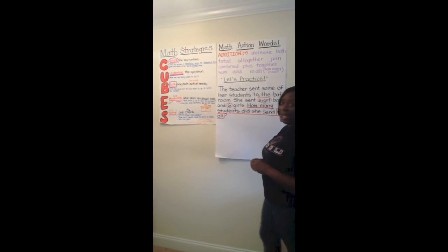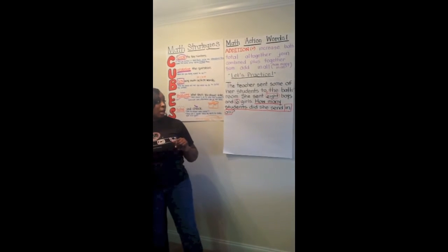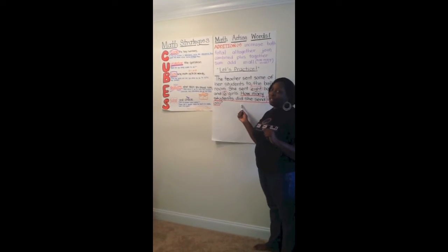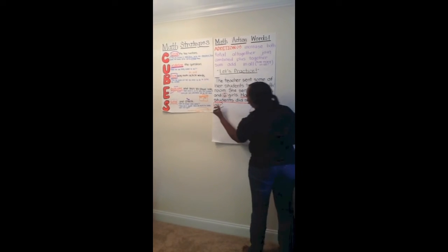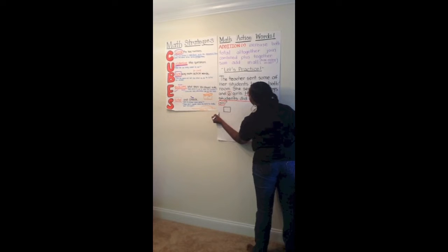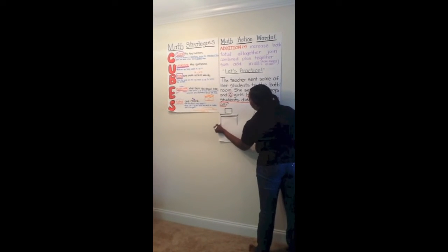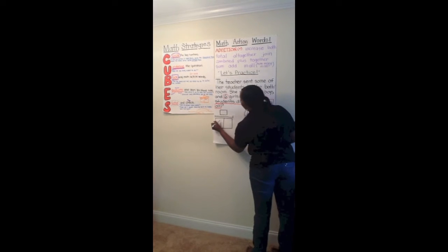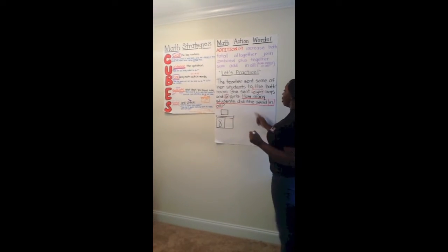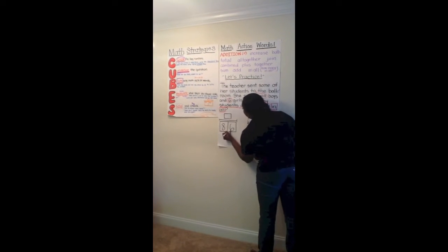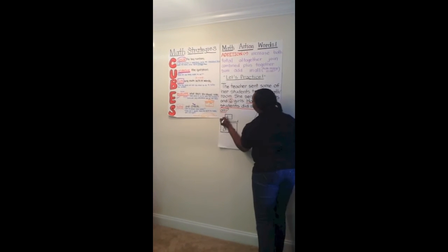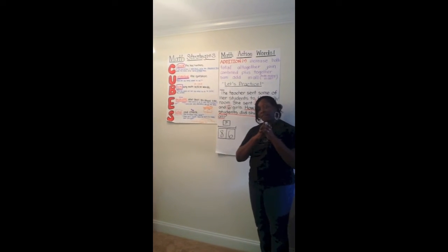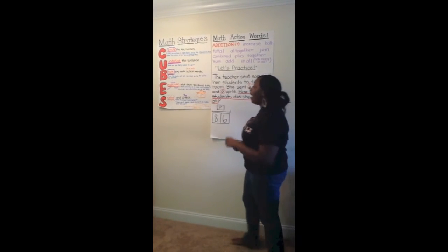We've circled the key numbers 8 and 6, underlined the question, and boxed the math action words 'in all.' Now it's time to evaluate what steps to take. Using our part-part-whole map: the teacher sent eight boys — that's a part — and six girls — that's a part. We have two parts and no whole number. When you have two parts and no whole number, you're going to add to find the whole.